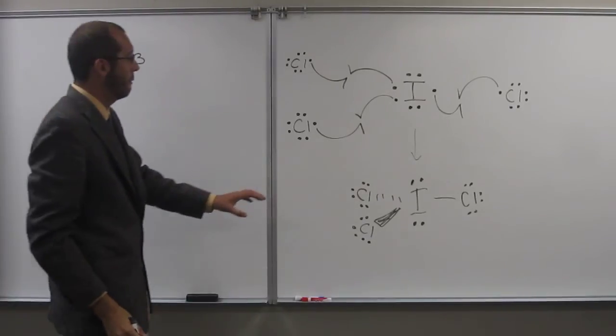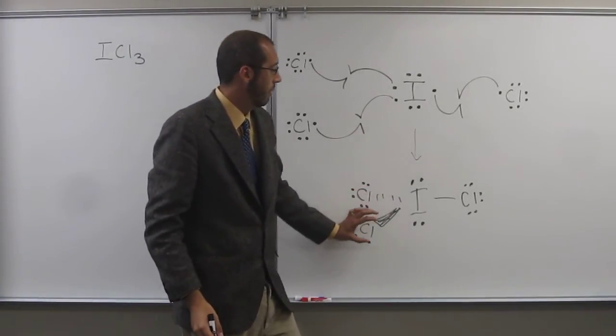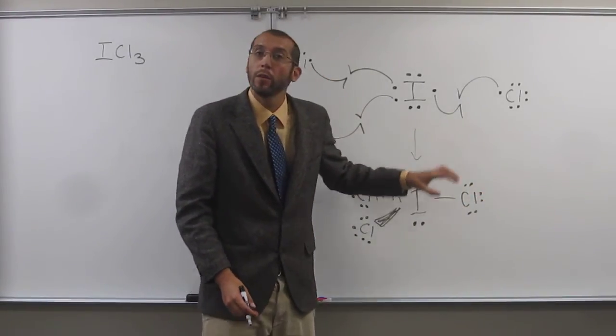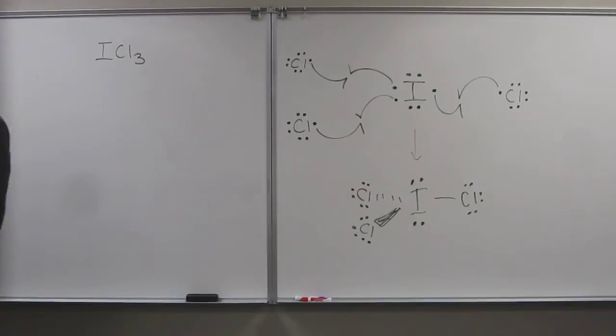So now we look and say, well, how many atoms do I have? One, two, three, right? And how many lone pairs? One, two. So I look for that thing. One, two, three. One, two. It's a T-shaped molecule.